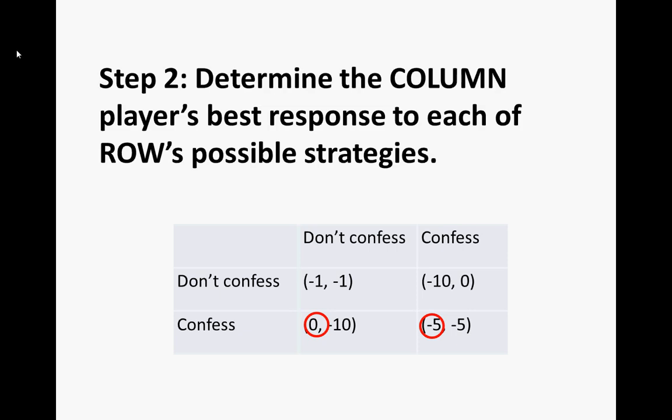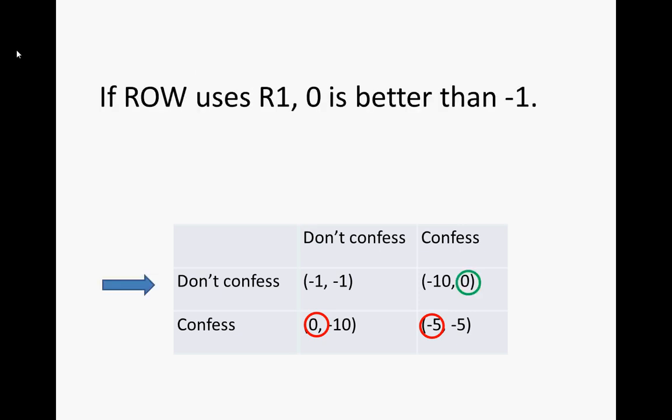The second step is to determine the Column player's best response to each of Row's possible strategies. If Row uses strategy R1, he's not going to confess. Column's payoffs will be either negative 1 or 0. The better of those is the bigger one — remember, in a non-zero-sum game, both players like big numbers. Zero is his better response.